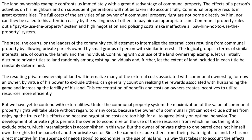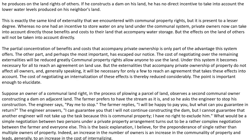Since he cannot exclude others from private rights to land, he has no direct incentive, in the absence of negotiation, to economize in the use of his land in a way that takes into account the effects he produces on the land rights of others. If he constructs a dam on his land, he has no direct incentive to take into account the lower water levels produced on his neighboring land. This is exactly the same kind of externality that we have encountered with community property rights, but is present to a lesser degree. Whereas no one had the incentive to store water on any land under the community system, private owners can now take into account directly those benefits and costs to their land that accompany water storage. But the effects on the land of others will not be taken into account directly.